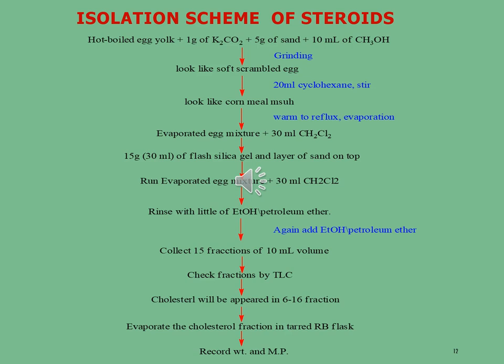After evaporation, we get the evaporated egg mixture, to which 30 ml of methylene chloride is added. This material is then subjected to column chromatography using 15 grams of flash silica gel and a layer of sand on top. The packed column is eluted with 30 ml of methylene chloride, then rinsed and eluted with ethanol and petroleum ether at a specific ratio. From column chromatography we obtain a total of 15 fractions, each with a volume of 10 ml. Each fraction is subjected to thin layer chromatography for identification of pure compounds and the presence of steroid molecules. Cholesterol is typically spread into fractions 6 to 16.